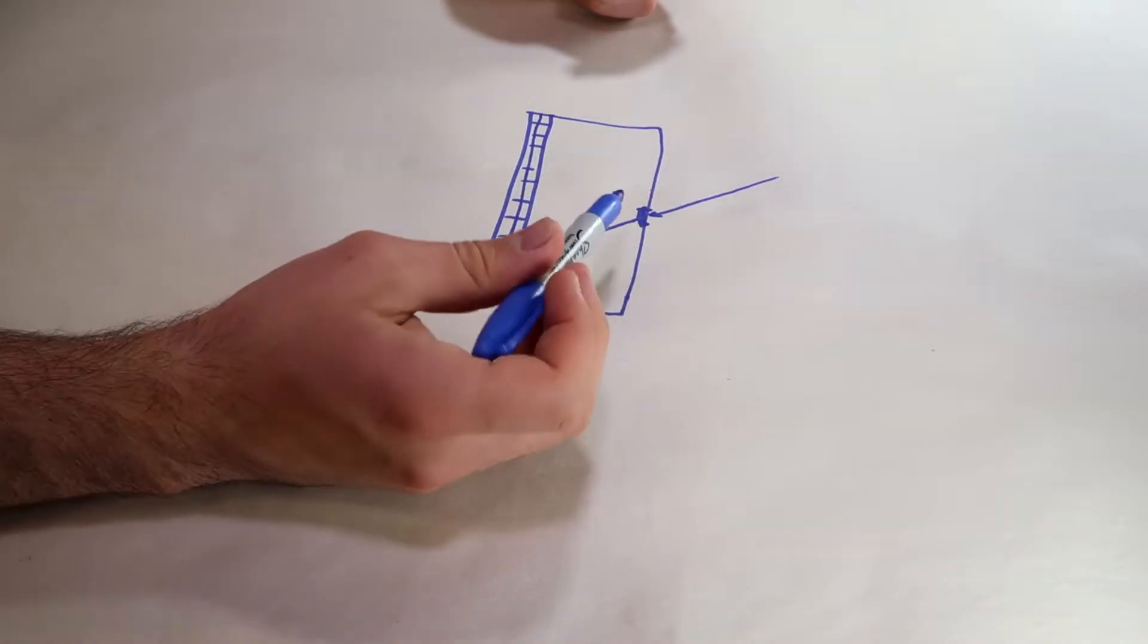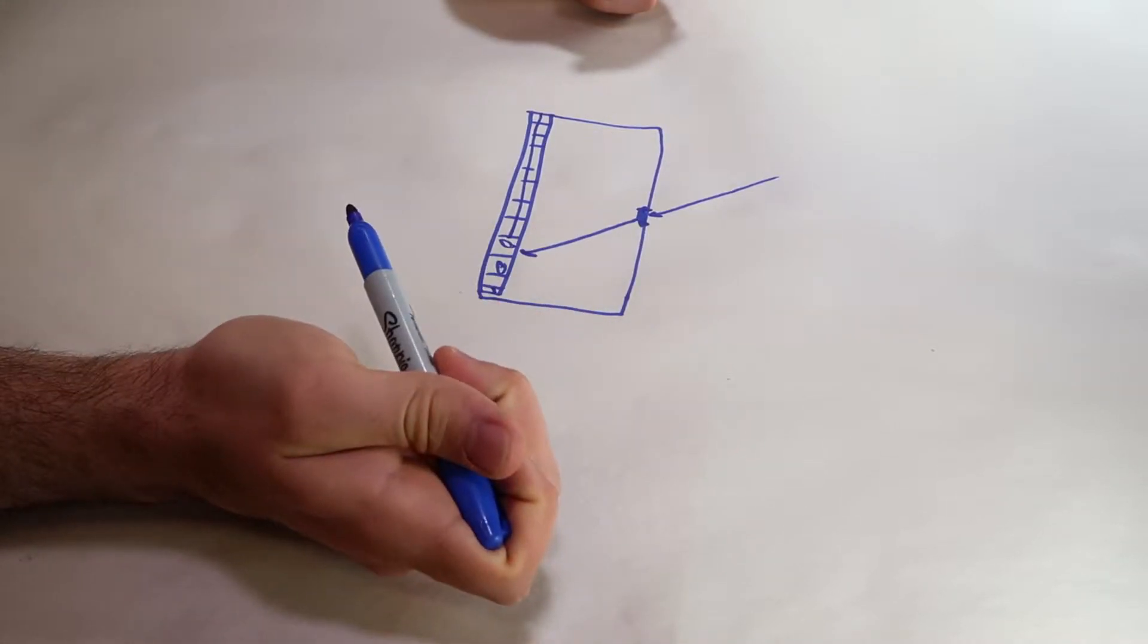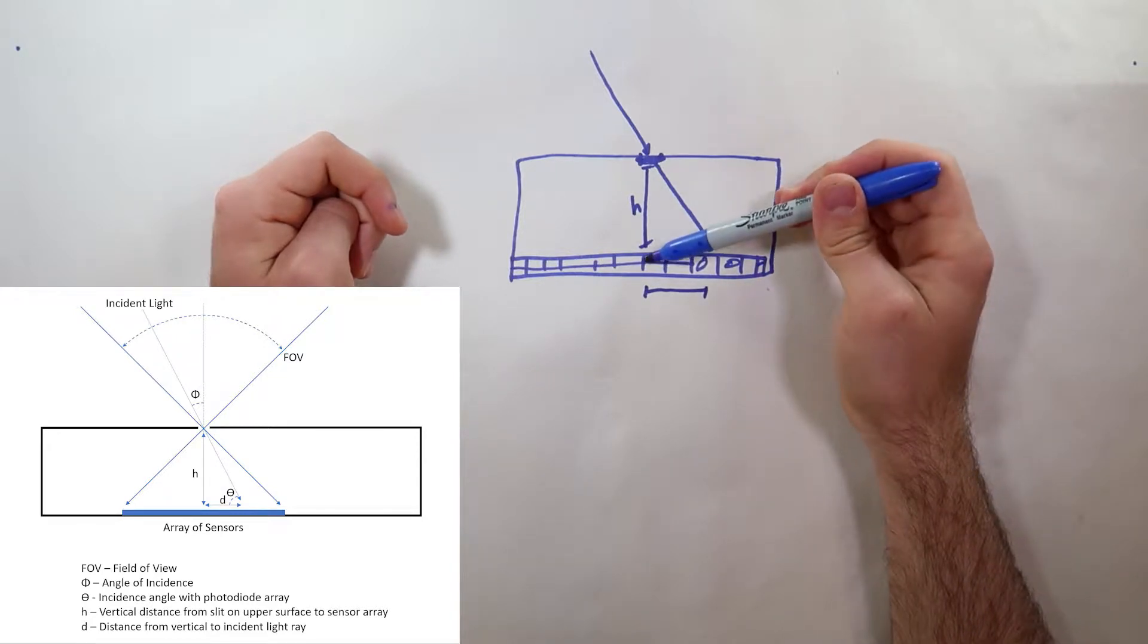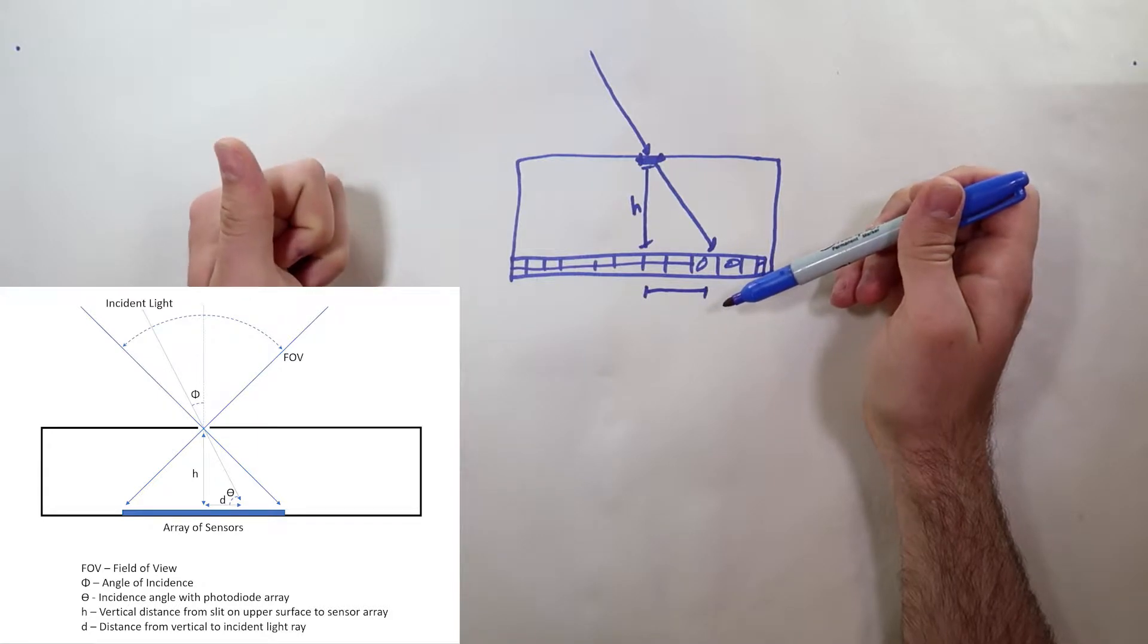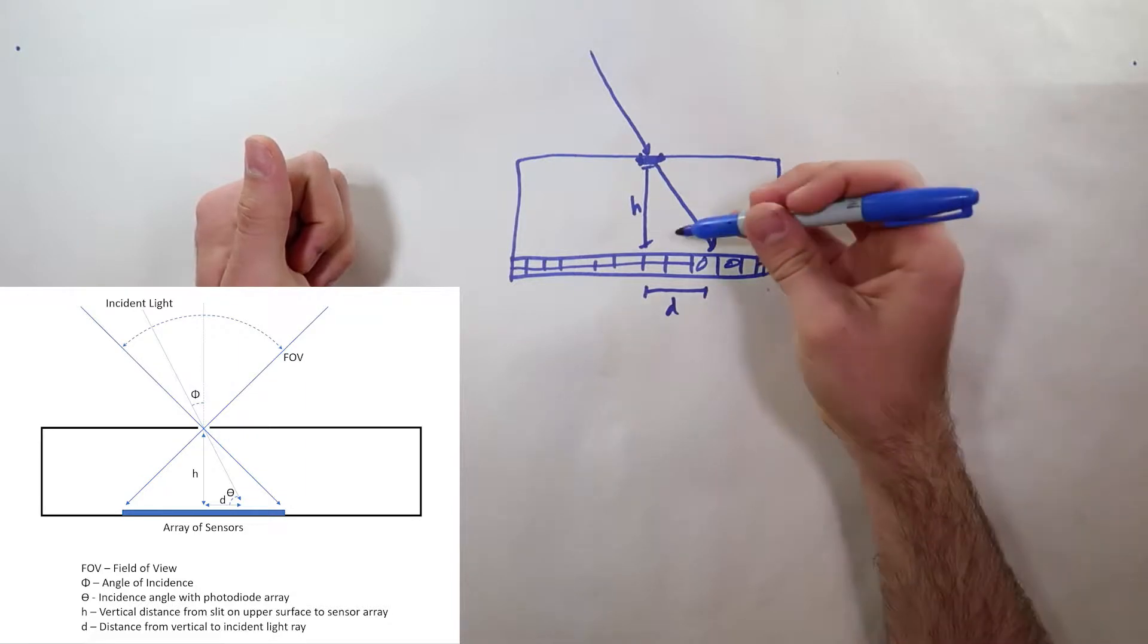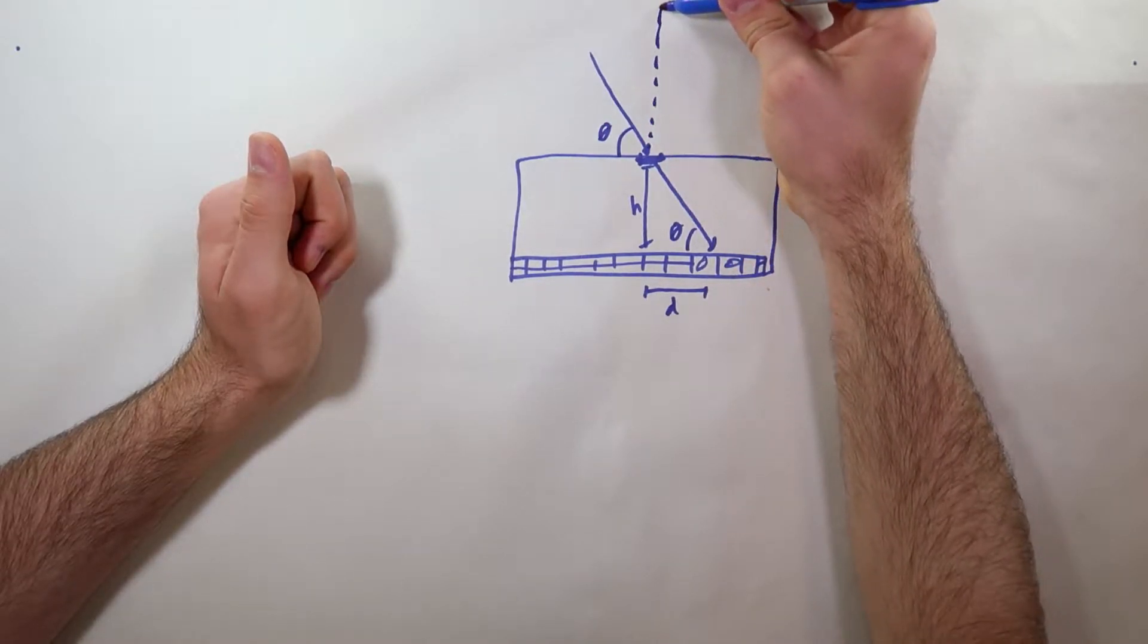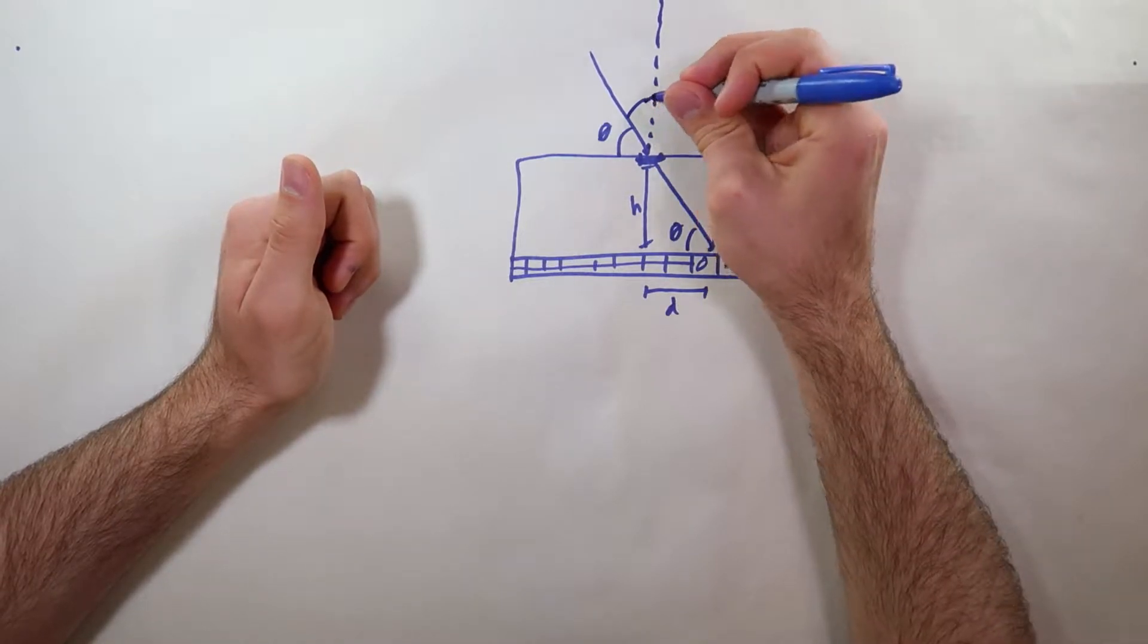We can measure the angle that the sun is coming into the box using this data. If we know the height of the box and the distance from the center of the box to the photoresistor that's recording a higher voltage value, let's call this D, then we can measure this angle theta, which is the same as this angle theta.